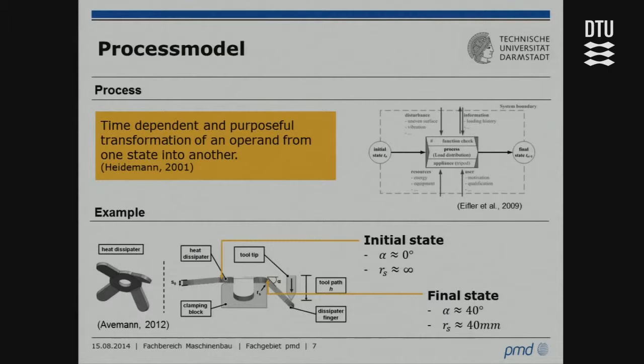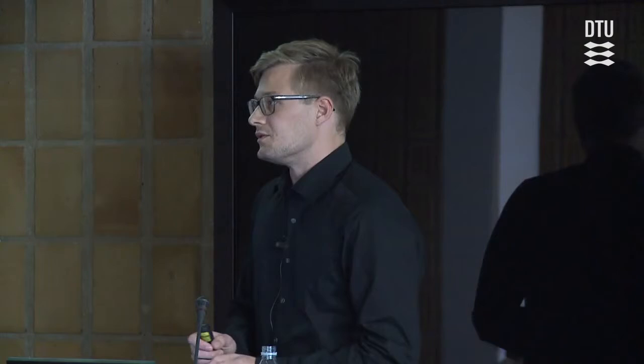First, let's look at the process model. A process is defined as the time-dependent and purposeful transformation of an operand from one state into another. On the right side you'll see an example of the process model we use. On the left side is the initial state, and properties from that initial state are transformed into a final state during the process — so we have properties at the beginning, properties at the end, and the transformation in between.